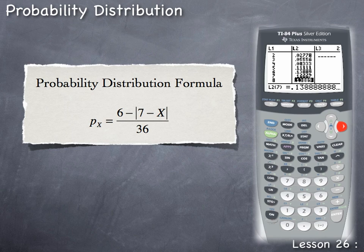For instance, to find the probability of rolling an 8 in craps, use the arrow button to navigate to 8 in the list. The corresponding probability is 0.13889, meaning there is approximately a 13.89% probability of rolling an 8. Using probability distribution formulas with the TI-84 calculator avoids the need to apply basic rules or count all possible outcomes manually.